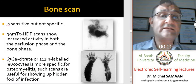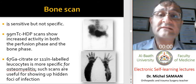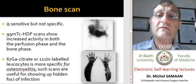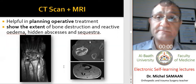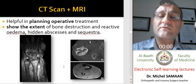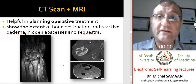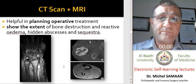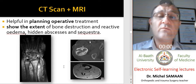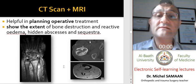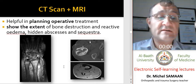Bone scan is useful and very sensitive, as in acute osteomyelitis, but it is not specific unless gallium and indium-labeled leukocytes are used. CT scan and MRI are really helpful — not primarily for diagnosis, since the usual diagnosis is already clear, but for planning the operation, determining the extent of bone destruction, and identifying the presence of abscesses and sequestra.